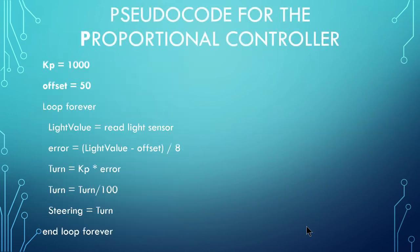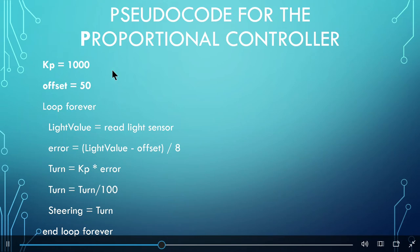The pseudocode for the P controller is shown. Now, it might seem intimidating, but it is actually very simple. The first line defines the kp, the proportional constant, which is multiplied by 10. The next line defines the offset, which is the average of the white and black light sensor values. Then, we have a loop that reads the light sensor value, finds the error, then calculates the turn values using our proportional constant.